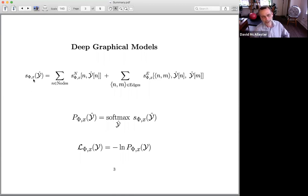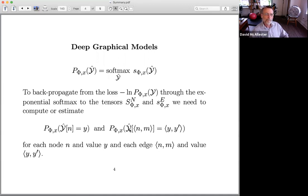So we've got this energy for every possible coloring and we've got this softmax over all possible colorings that defines the probability distribution for a given X and a deep model with this parameter vector over the possible colorings where we're assuming these tensors are computed by a deep network. And then our loss function is just the negative log probability of the gold coloring under the probability defined by this exponential softmax.